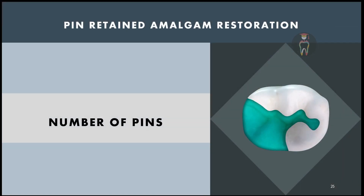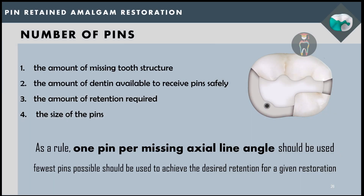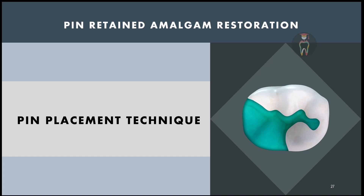The number of pins is determined by the amount of missing tooth structure, the amount of dentine available to safely receive pins, the retention required, and the size of pins being used. As a rule, one pin per missing axial line angle should be used, and always the minimum number of pins providing adequate retention should be placed. For example, if the mesial and lingual walls are missing, one pin can be placed at the mesiolingual line angle.